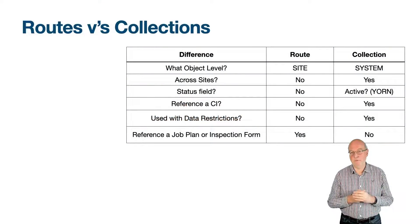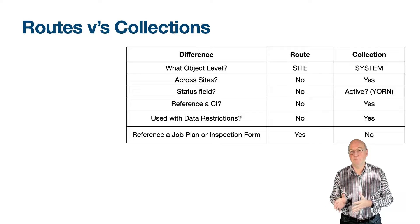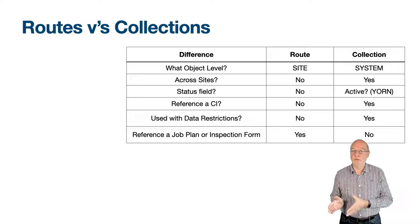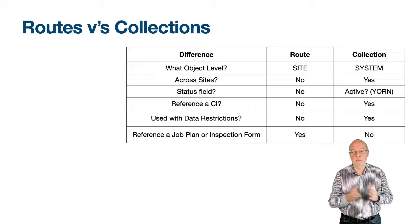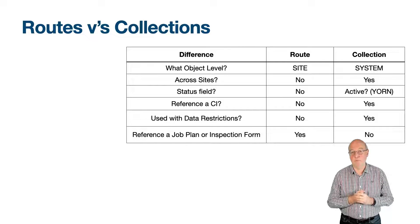Let's recap the differences between a route and a collection. A route is defined at the site level; a collection is defined at the system level. The route stops of a route must belong to the same site as the route, while collection details can belong to different sites or organisations. A route has no status field; a collection has a simple active field. A collection can reference a configuration item but a route cannot. A collection can be used in security groups but a route cannot. A collection cannot reference a job plan or inspection form, but a route can.